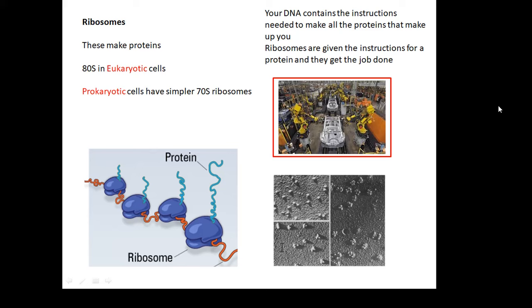Ribosomes. Ribosomes make proteins. They're like little factories. Your DNA contains the instructions needed to make all the proteins that make you up, and ribosomes are given the job to make a particular protein, and they make it. So ribosomes make proteins, and the instructions to make a particular protein are in your DNA.